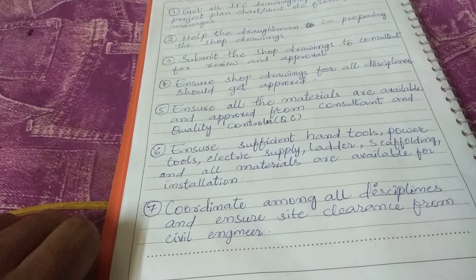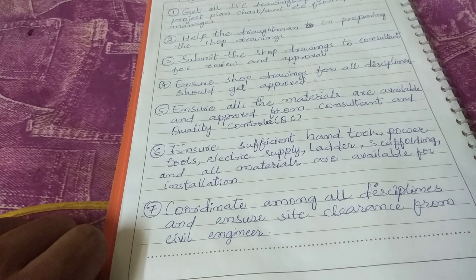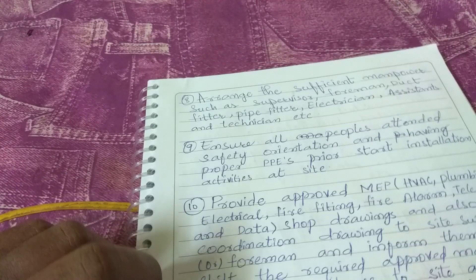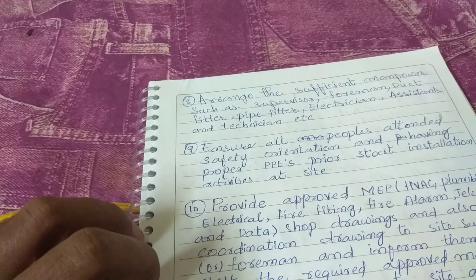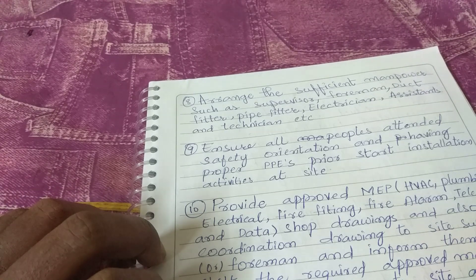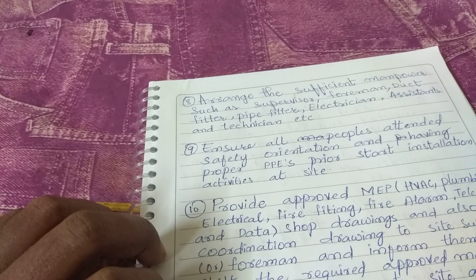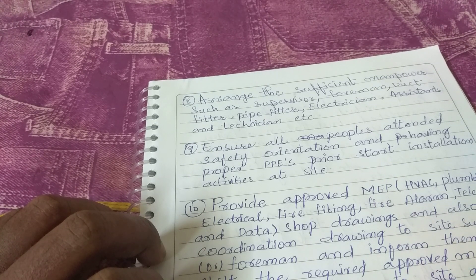The seventh responsibility is to coordinate among all disciplines and ensure site clearance from the civil department. The eighth responsibility is to arrange sufficient manpower such as supervisor, foreman, duct fitter, pipe fitter, electrician, assistant, technician, etc.